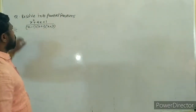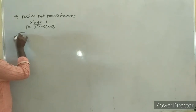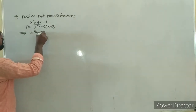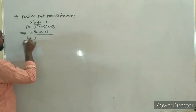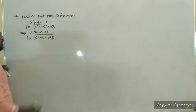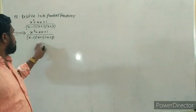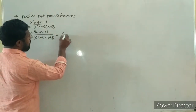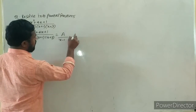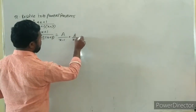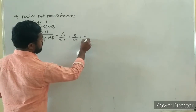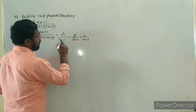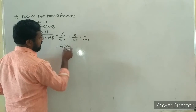Next example: resolve into partial fractions. The question is x squared plus 4x plus 1 upon (x-1)(x+1)(x+3). So the form is: A upon (x-1) plus B upon (x+1) plus C upon (x+3).